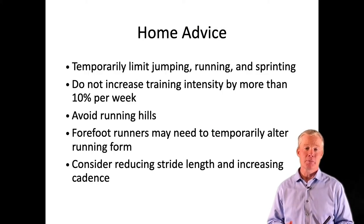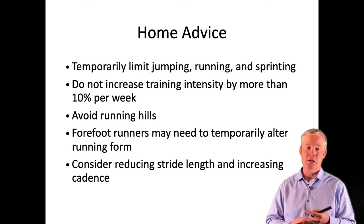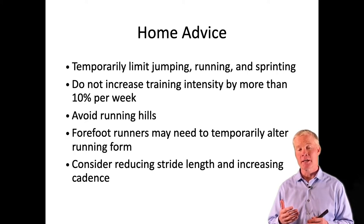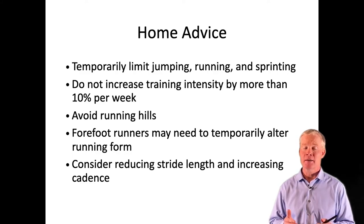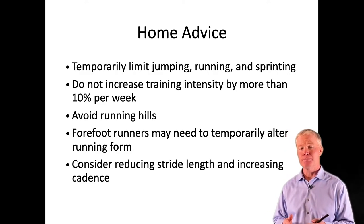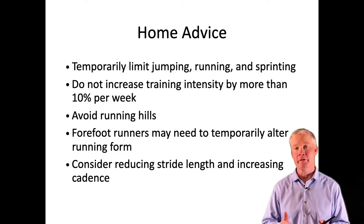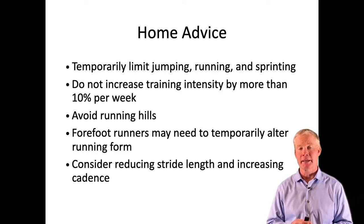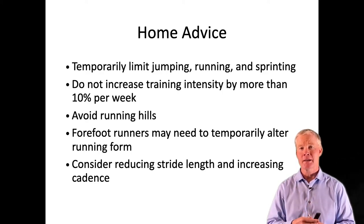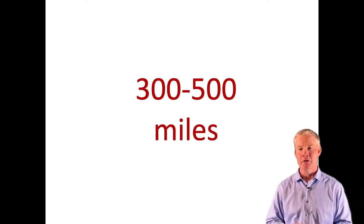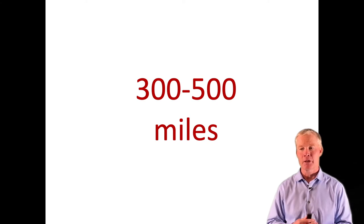For home advice: the patient needs to minimize activity that puts stress on the fascia. We also don't want them to break the 'terrible twos' — a gradual increase in activity, 10% per week. Avoid hill running; if you're a forefoot runner, you may need to transition or even hold off on running temporarily and switch to cycling. Increasing stride width and stride rate will reduce load, and make sure they have good shoes — the rule is 300 to 500 miles should be about the end of the lifespan for a set of shoes.